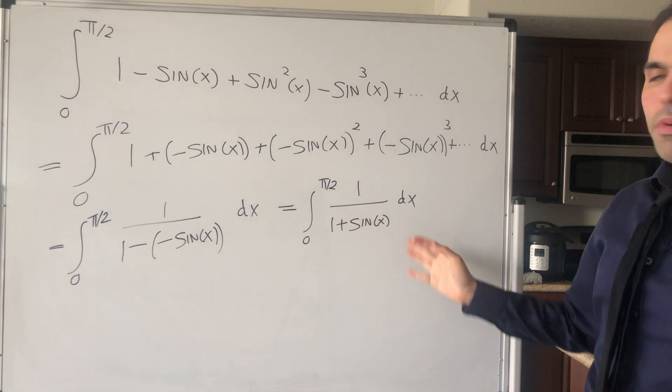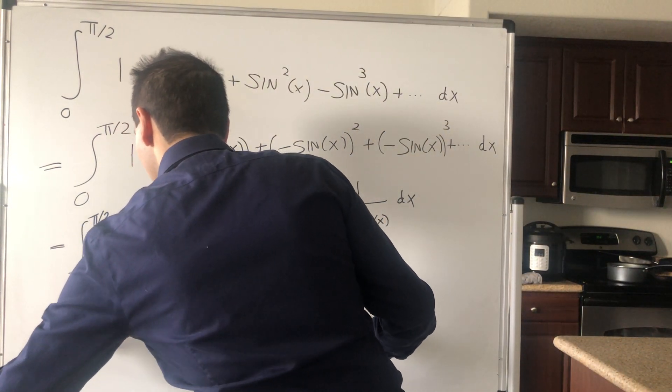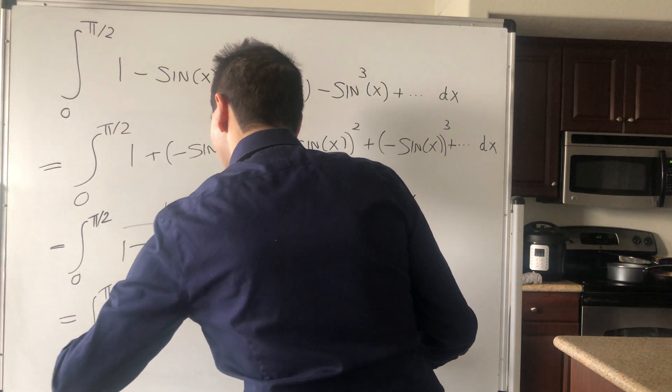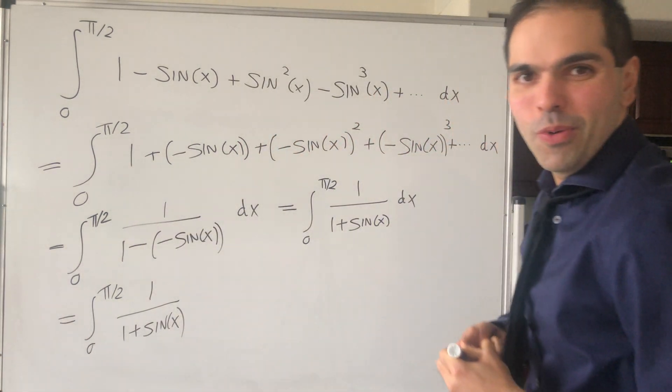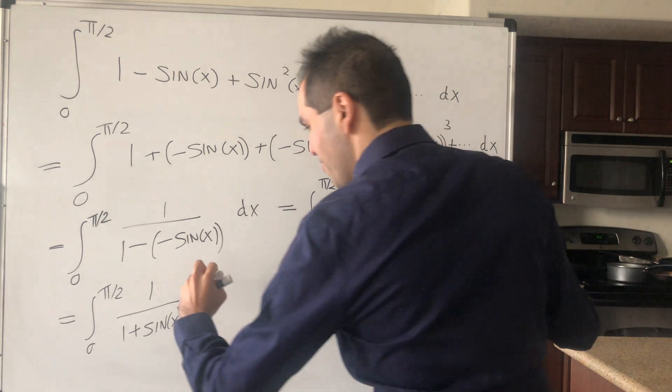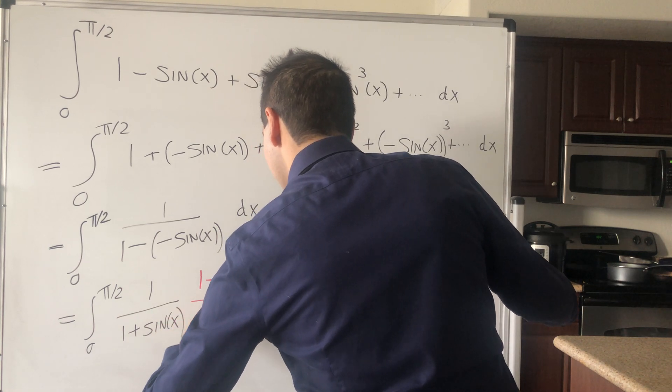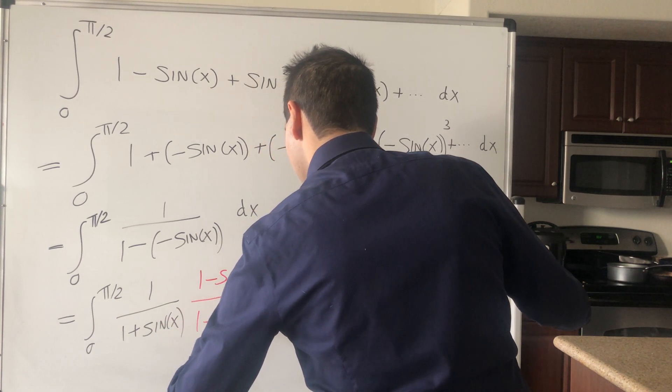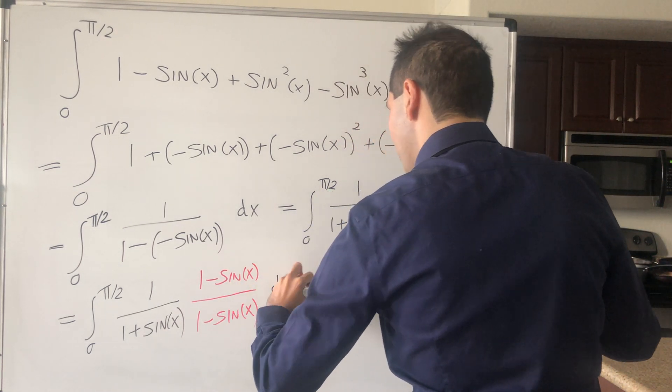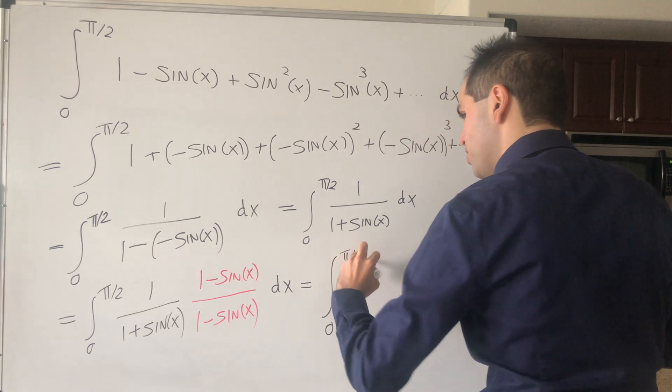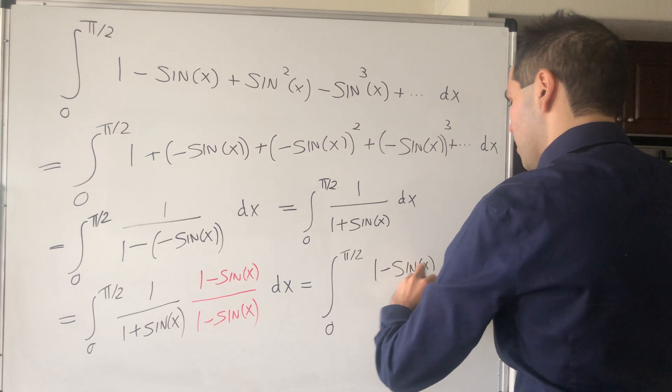So how do we do this? Well, this 1 plus sin of x, let's try to multiply it by the conjugate form. So this becomes the integral from 0 to pi over 2 of 1 over 1 plus sin of x. And let's see, some people wanted to see a red pen. So let's multiply this by 1 minus sin of x over 1 minus sin of x, dx. And then what do we get? So this is the integral from 0 to pi over 2. So the numerator is 1 minus sin of x.